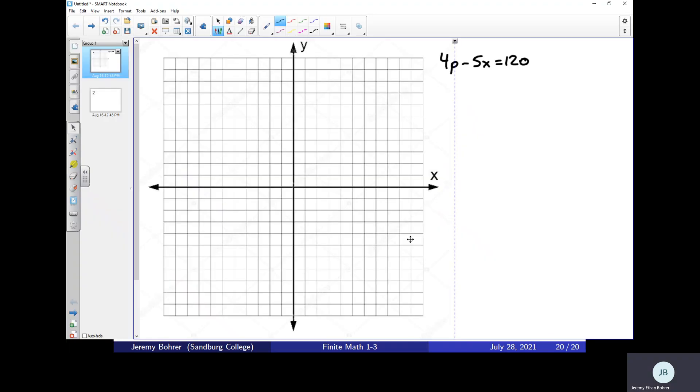So coming over to our slides, I've already written the equation here and I've got my grid up. I am going to first solve for P. 4P minus 5X equals 120 means that 4P equals 5X plus 120.